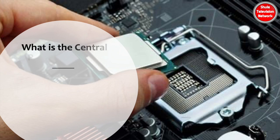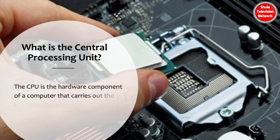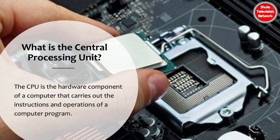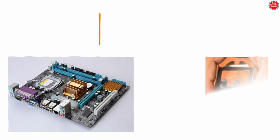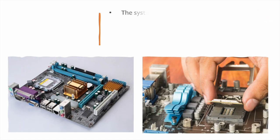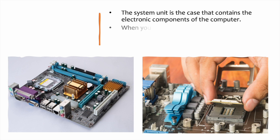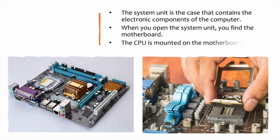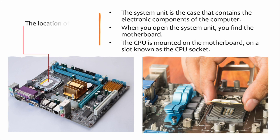The CPU is the hardware component of a computer that carries out the instructions and operations of a computer program. The system unit is the case that contains the electronic components of the computer. When you open the system unit, you find the motherboard. The CPU is mounted on the motherboard on a slot known as the CPU socket.